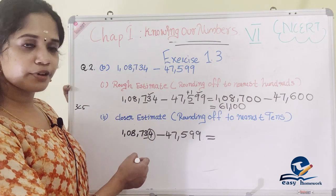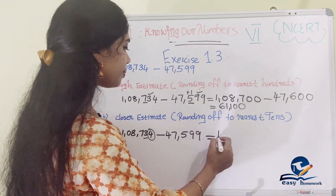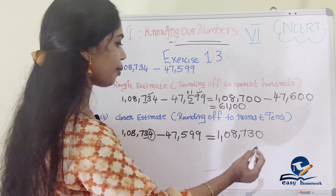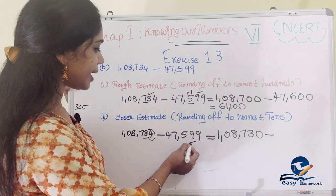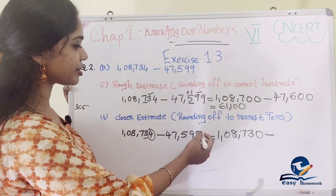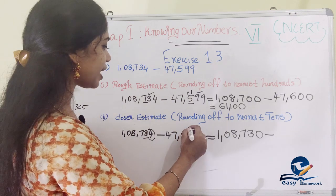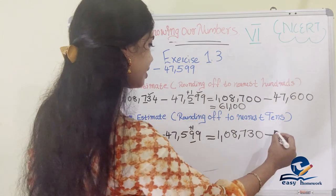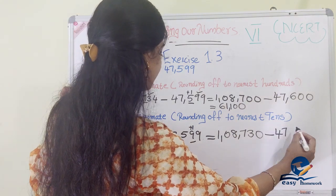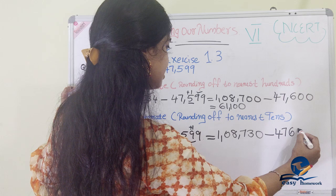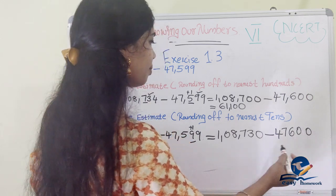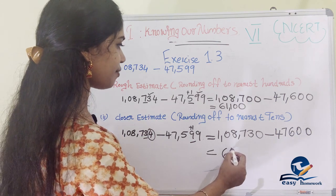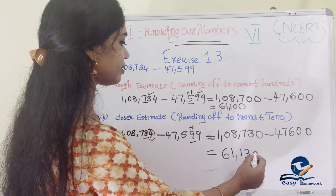Now for the closer estimate, rounding to nearest 10s. The tens digit in 1,08,734 is 4, which is less than 5, so we keep it as 1,08,730. For 47,599, the tens digit is 9, which is greater than 5, so we round up to 47,600. Subtracting gives approximately 61,130.